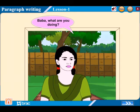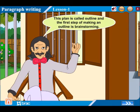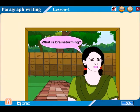Baba, what are you doing? I have to write something. Before writing, I need to make a plan. The plan is called an outline, and the first step of making an outline is brainstorming. What is brainstorming?